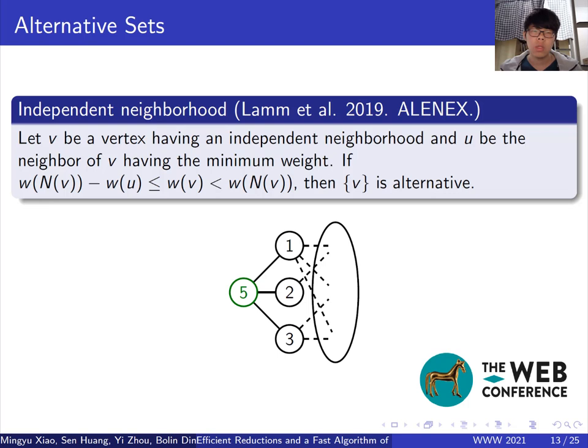An alternative set can always be folded as a fake vertex. The first case of alternative set talks about independent neighborhood vertices. If its neighborhood forms an independent set, we say the vertex has independent neighborhood. And if the vertex satisfies the condition here, it must be alternative. This case is also used in previous works.